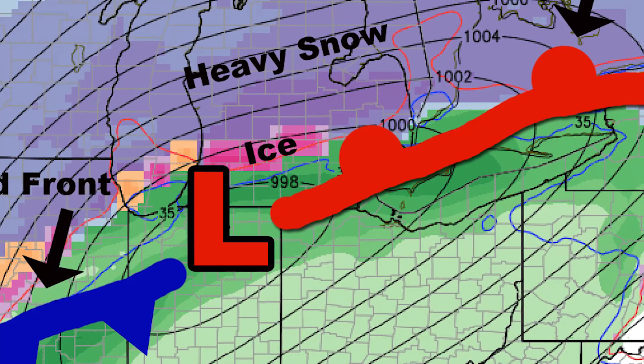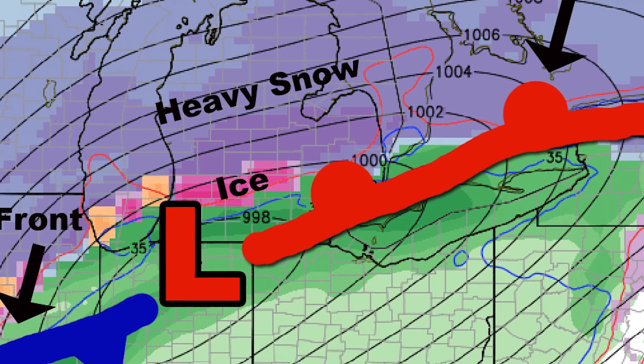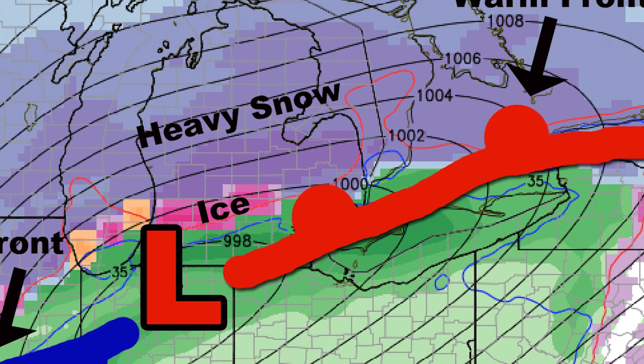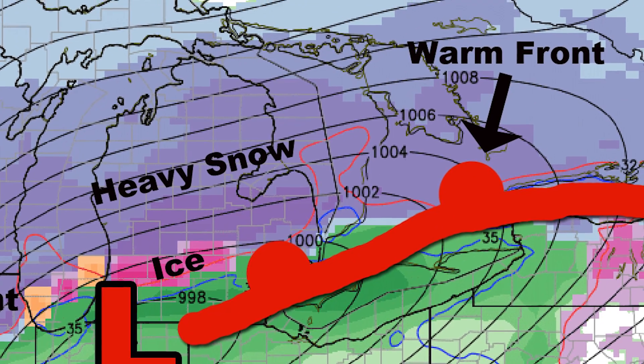Second thing is this red line with the red semicircles — that's a warm front, and the snow and the freezing rain will line up north of that warm front.